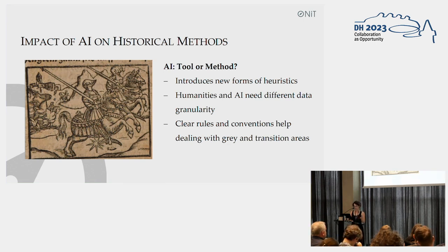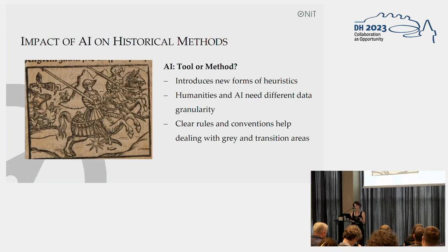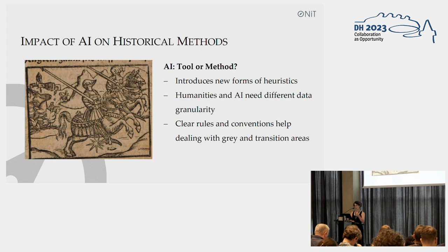Our experiences so far showed that AI introduces new forms of heuristics and that we were really forced to rethink traditional approaches for historical image annotation. We realized that another data granularity is needed. To create this training data set, we had to think about what representations of nature can also be machine readable, as opposed to those that need some interpretation.